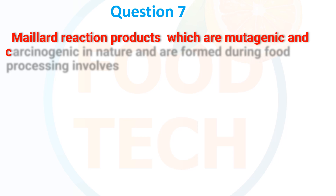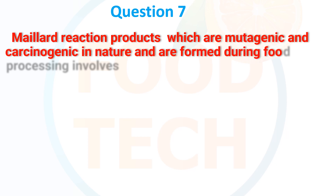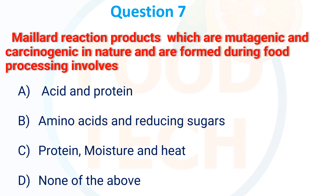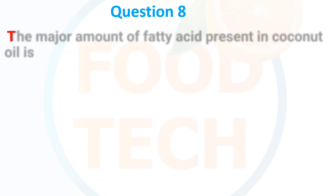Maillard reaction products, which are mutagenic and carcinogenic in nature and are formed during processing, involve: A. Acid and protein, B. Amino acid and reducing sugar, C. Protein, moisture and heat, D. None of the above. The correct answer is amino acid and reducing sugar.